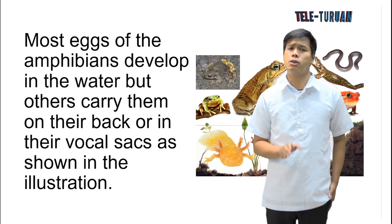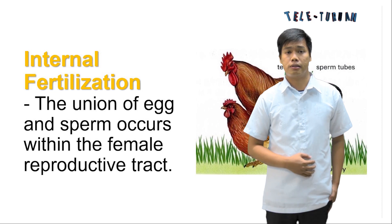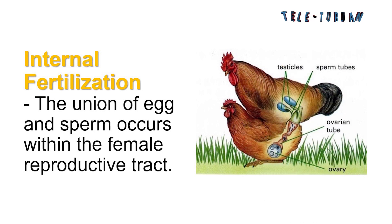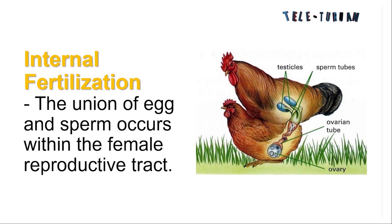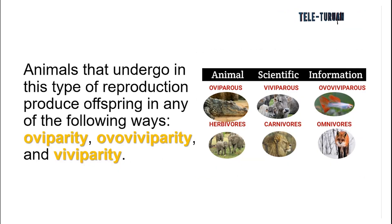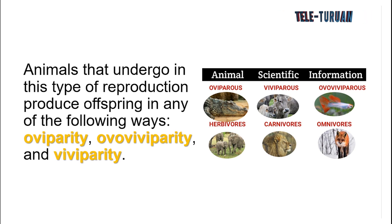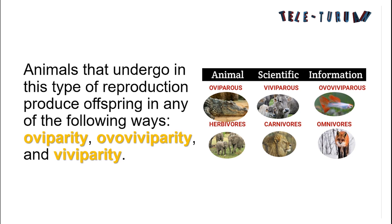Let us proceed to internal fertilization. In internal fertilization, the union of egg and sperm occurs within the female reproductive tract. Animals that undergo this type of reproduction produce offspring in any of the following ways: oviparity, ovoviviparity, and viviparity.